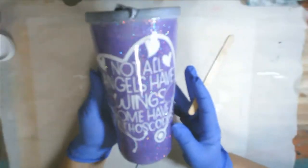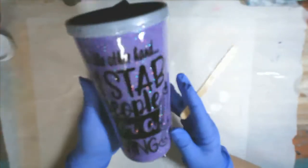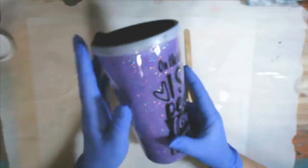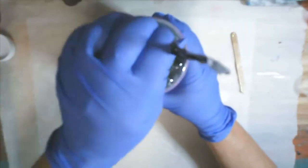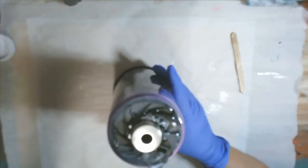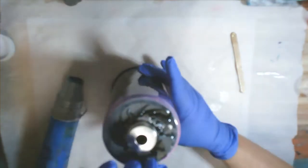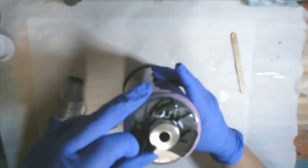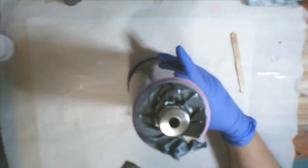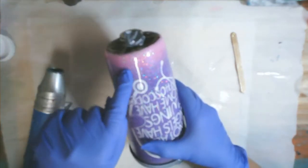After I did that, I put another layer of resin on, which I didn't video to save time. Now I am ready to put this back together. First thing I'm going to do is remove the tape from the bottom of the cup, and it's stuck on there pretty good.